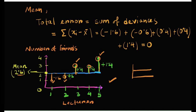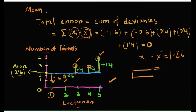We can calculate the magnitude of these deviations by subtracting the mean value from each observed value: x_i minus x_bar, where x_i is the observed value and x_bar is the mean, 2.6 in our case. For example, lecturer 1 had only one friend. The x-axis shows the lecturer and the y-axis shows the number of friends. So x_i minus x_bar gives us 1 minus 2.6, meaning lecturer 1 has a deviation of minus 1.6.